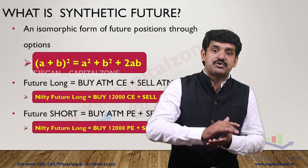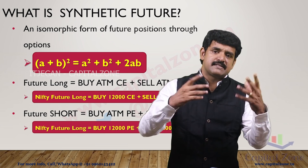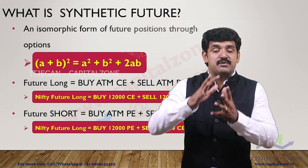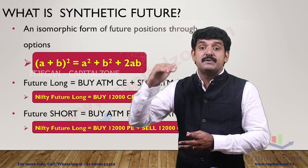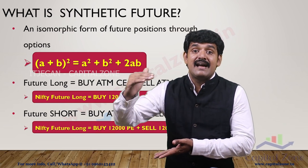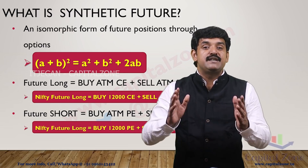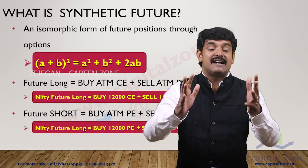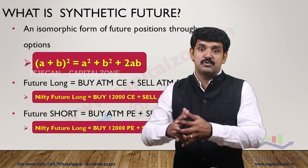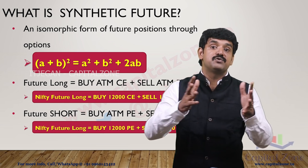Likewise, if you want to go short in futures, you simply sell — Nifty Future short. In Synthetic Futures, you need to sell the 12,000 call and buy the 12,000 put. Generally, you do this at the money. If the market is at 12,000, you do it at 12,000. If the market is at 10,000, you do it at 10,000.